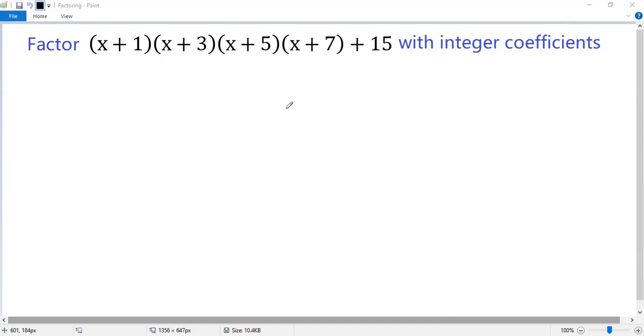First, we change the order of these factors. So we get x plus 1, then x plus 7, then x plus 3, then x plus 5, plus 15.